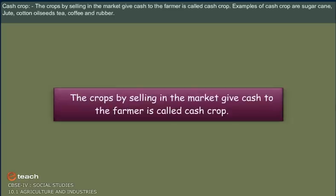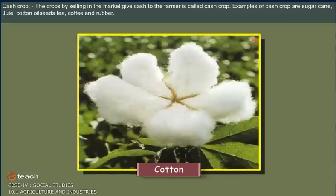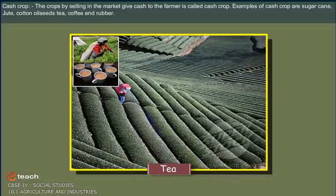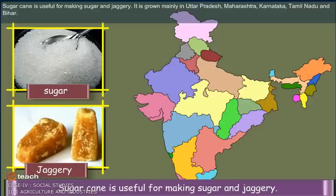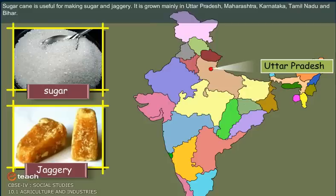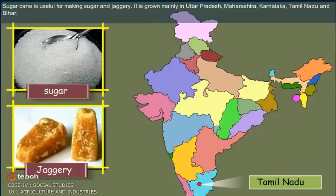Cash crops are crops whose selling in the market gives cash to the farmer. Examples of cash crops are sugarcane, jute, cotton, oil seeds, tea, coffee, and rubber. Sugarcane is useful for making sugar and jaggery. It is grown mainly in Uttar Pradesh, Maharashtra, Karnataka, Tamil Nadu, and Bihar.